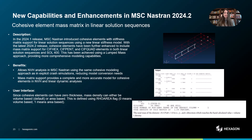In the 2024.1 release, we introduced cohesive elements with stiffness matrix support in linear solution sequences, making it much easier to translate crash models to NVH models without losing accuracy on cohesive elements. Now, in MSC Nastran 2024.2, we added mass matrix support for these elements using a lumped mass approach. This enhancement provides more accurate and complete modeling for NVH and linear dynamic analysis and streamlines the transition between crash and NVH simulations.